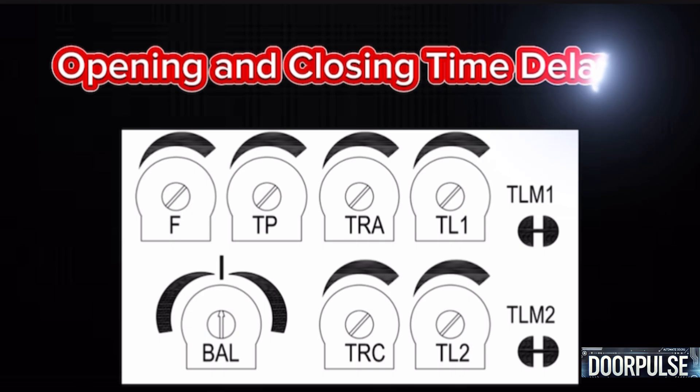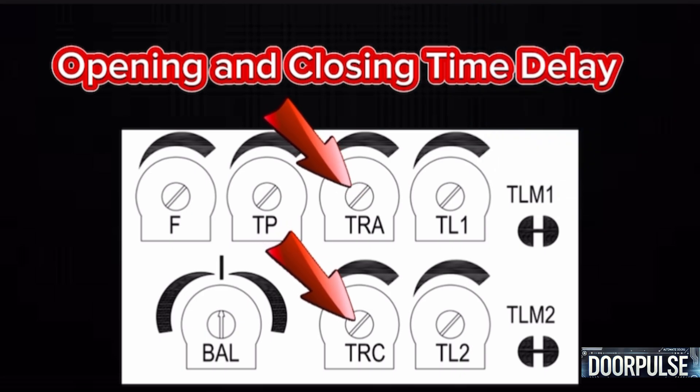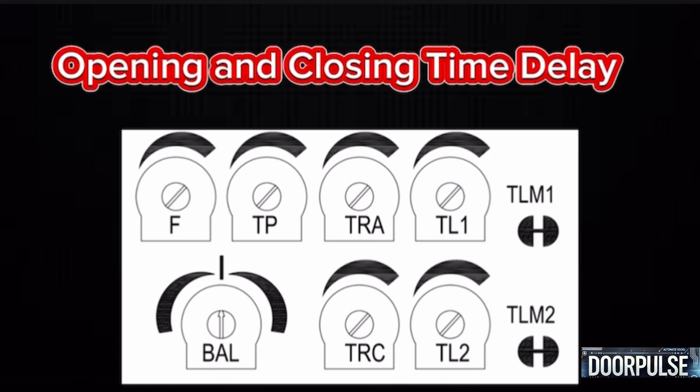4. Opening and closing time delay (TRA and TRC) — synchronizes the movement of dual gate leaves to prevent overlap during opening or closing. TRA (opening time delay): adjust to ensure the second leaf starts moving after the first leaf has sufficiently progressed. TRC (closing time delay): ensures that during closing, the first leaf completes its movement before the second leaf reaches its final position.